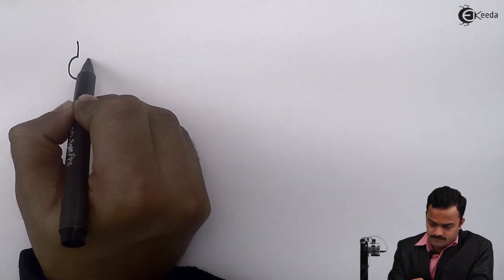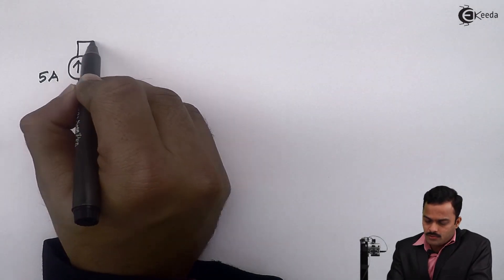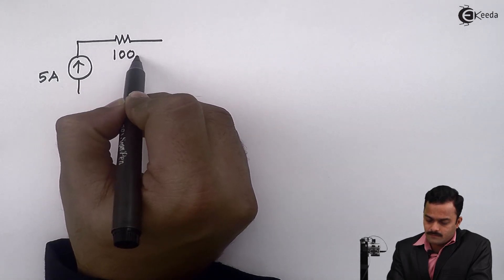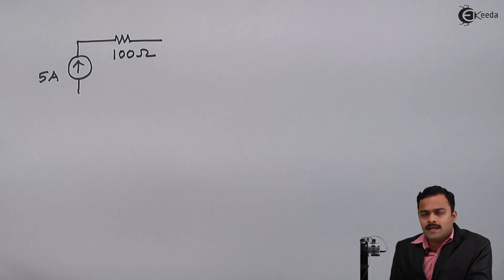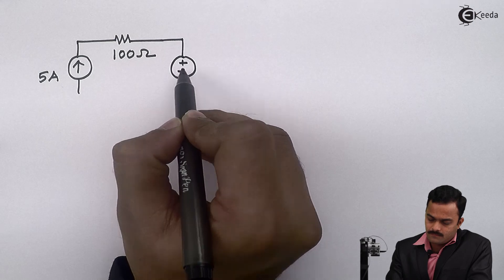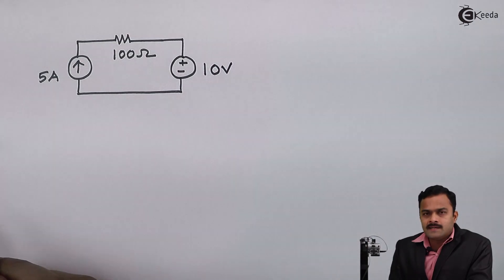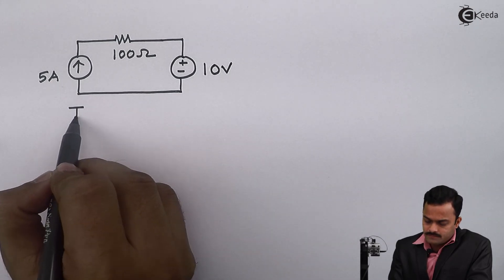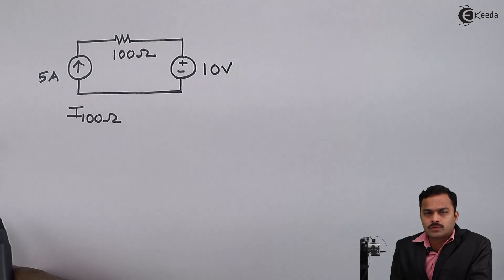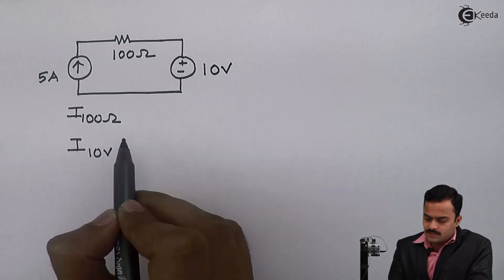In this video we are going to see some important points about a current source. Let's take a current source of 5 amperes. To this current source I am connecting one resistance of 100 ohm in series, and one more element — a voltage source of 10 volt — connected in series. Suppose we have been asked to find out what is the current flowing through the 100 ohm and what is the current flowing through the 10 volt battery.